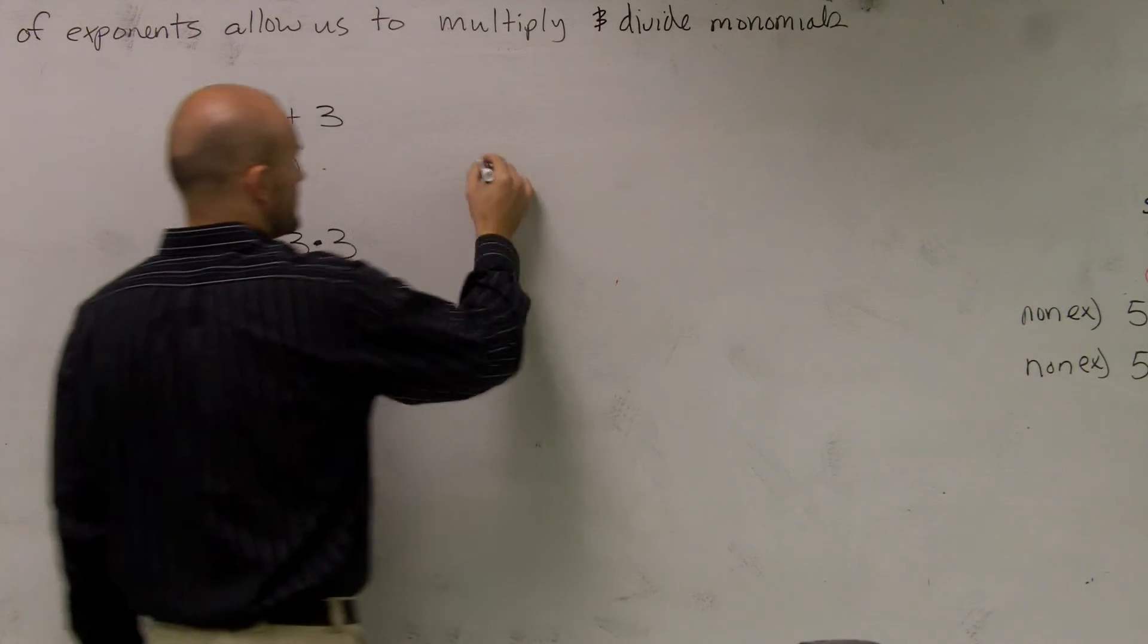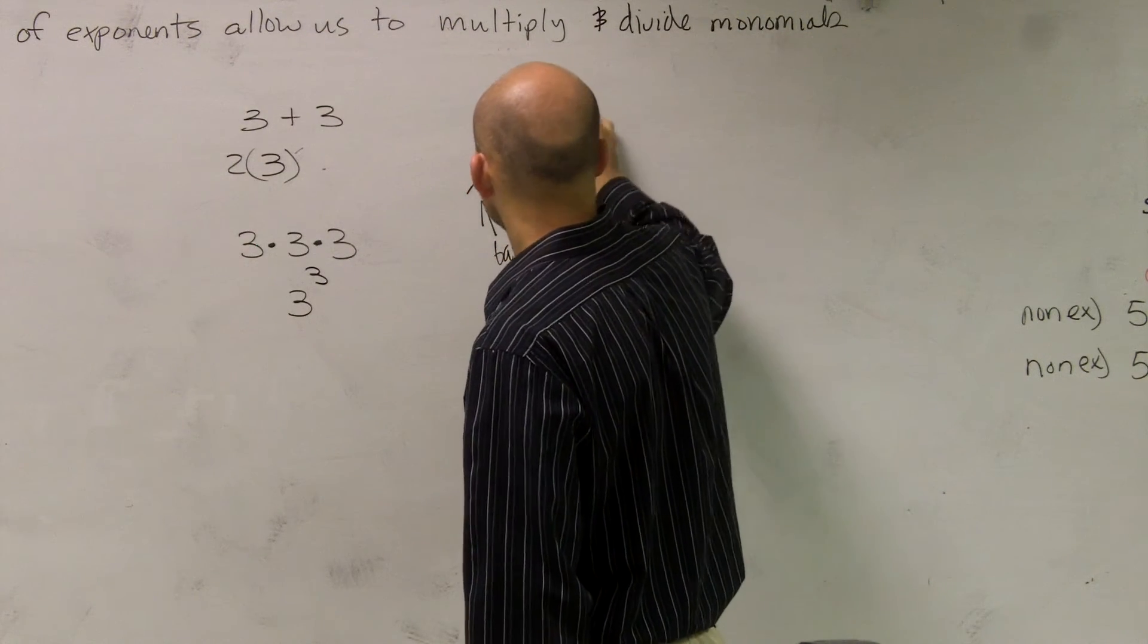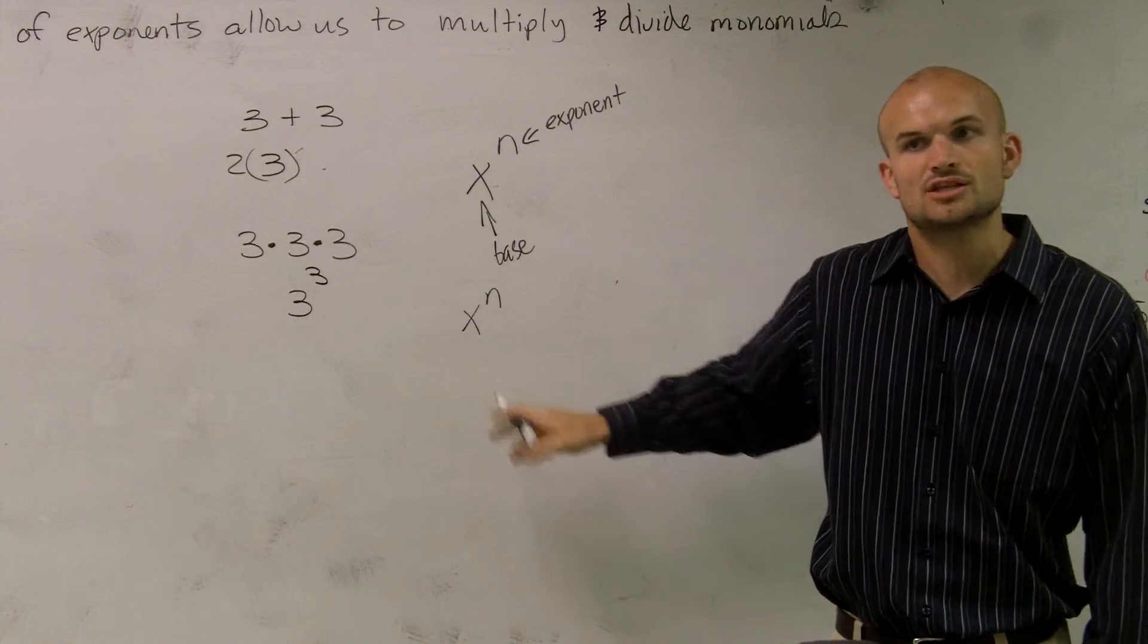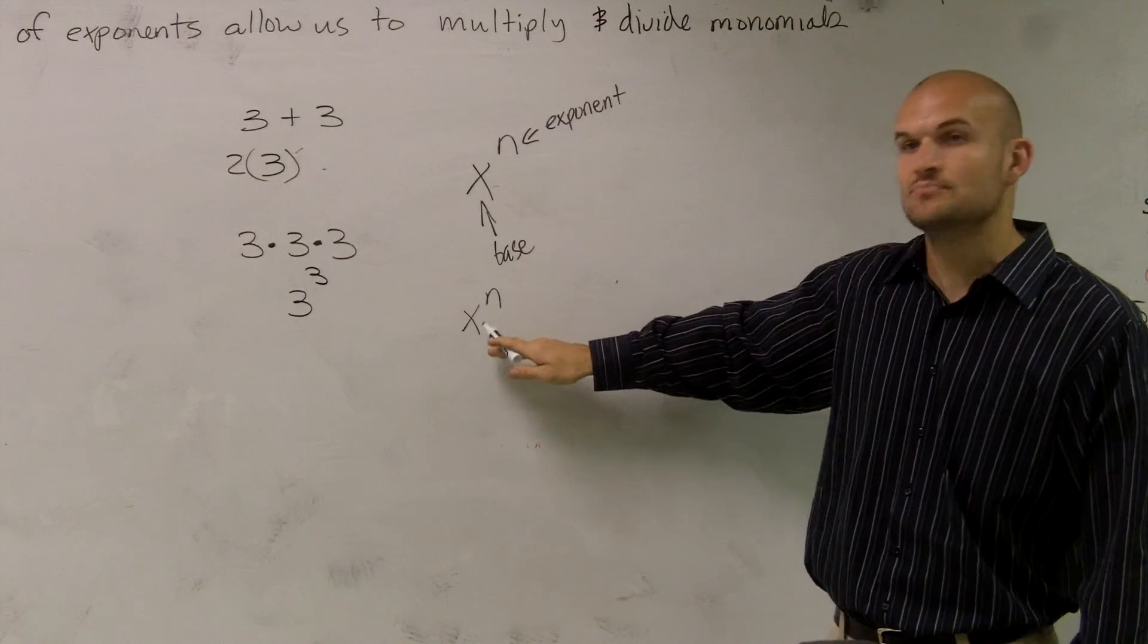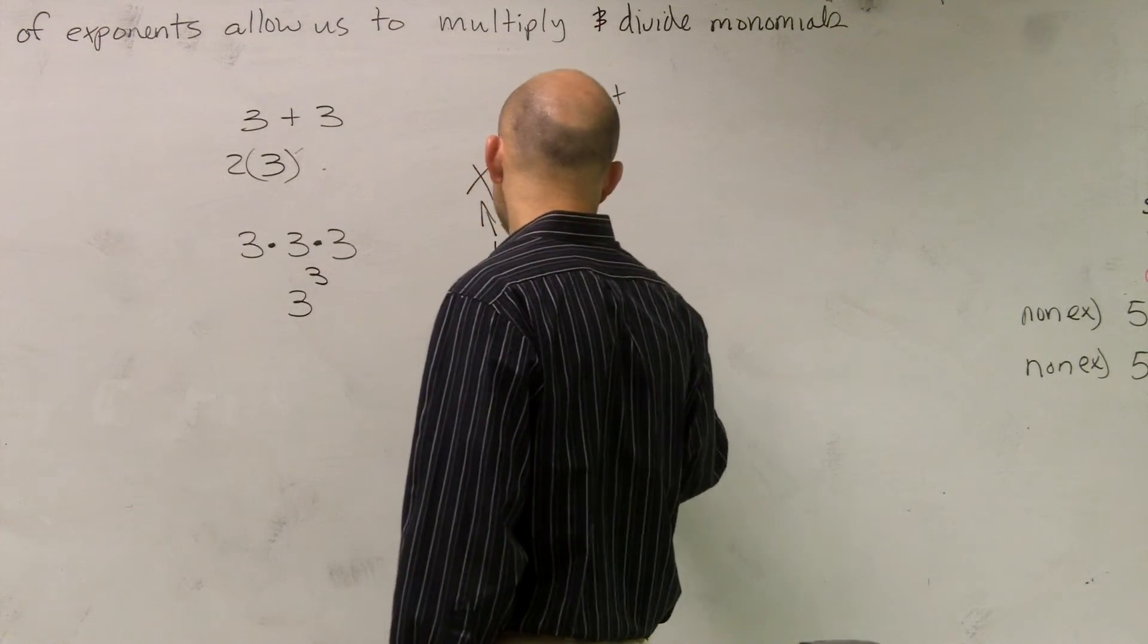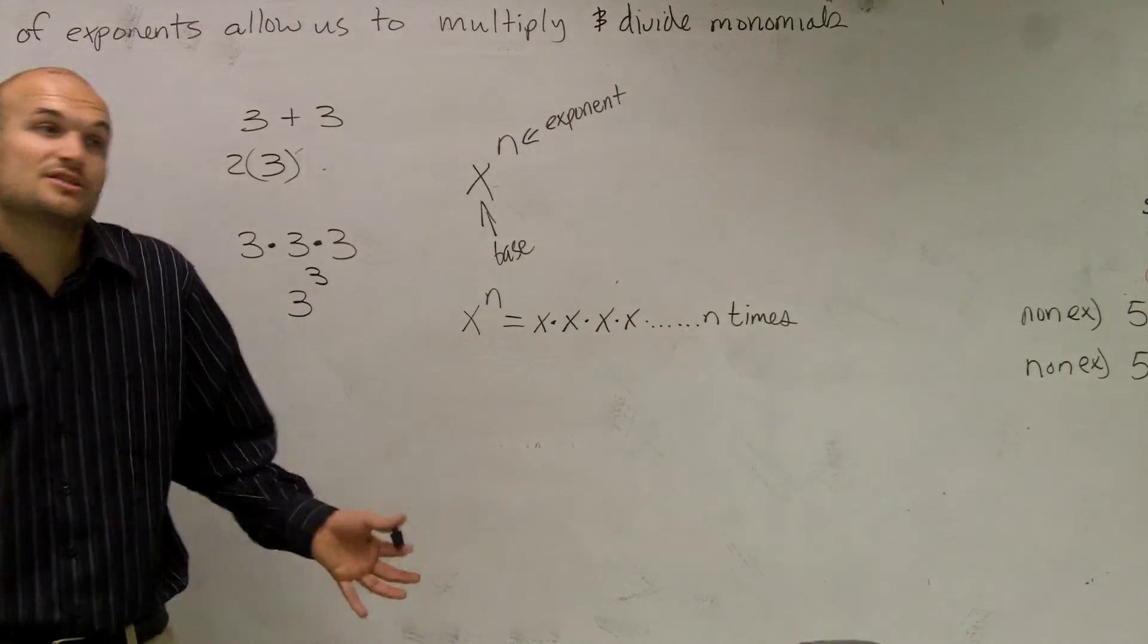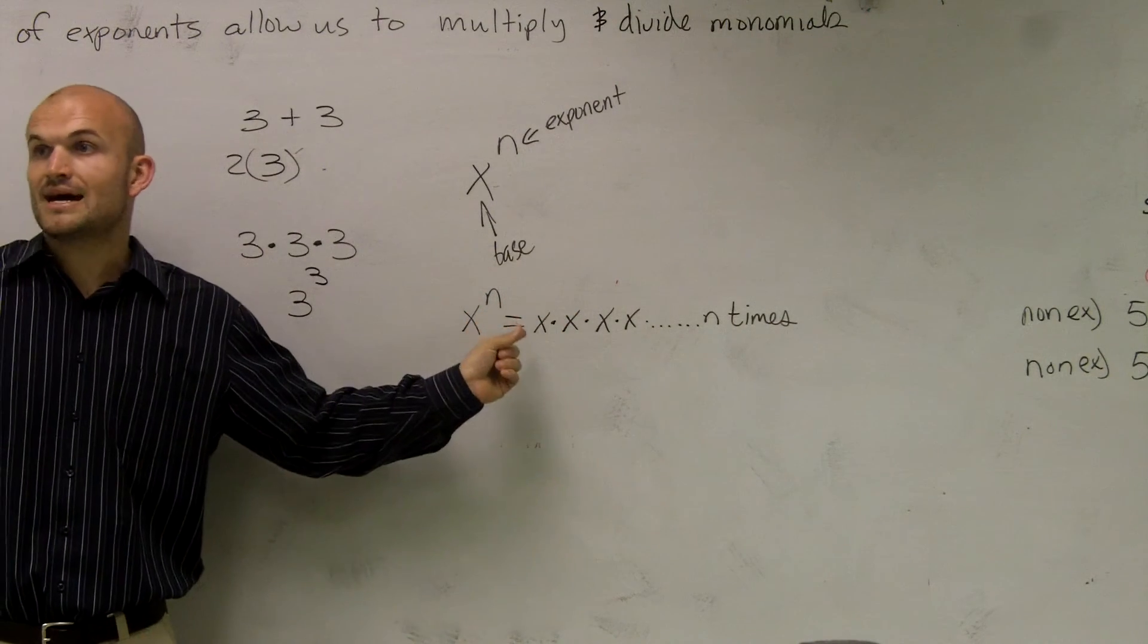So the basic thing about an exponent is we're going to have our base, and then the exponent. And what the exponent says is it's how many times you're going to multiply your base by itself. So the exponent says I'm going to multiply my base n times by itself. So what this equals is x times x times x times x dot dot dot n times. So what that means is you're going to multiply its base by itself that many times what your exponent is.